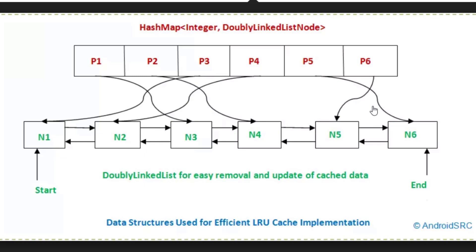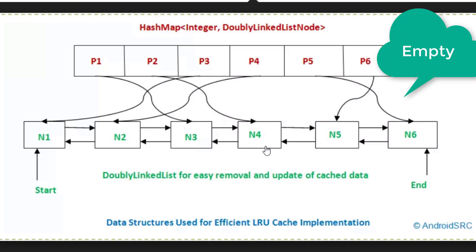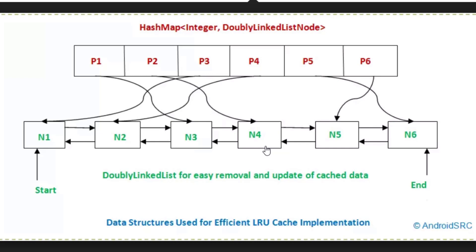Let's say we have six items the cache can accommodate. Whenever we insert items, we always insert at the starting of the linked list. By this concept, the most frequently used items will be at the start of the linked list, and even if an item is repeated, we put it at the starting. So the least recently used items will be at the end of the linked list. Whenever the cache is full, we remove items from the end and put the most recently used items at the start.